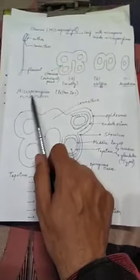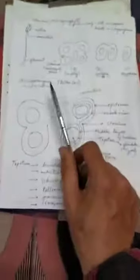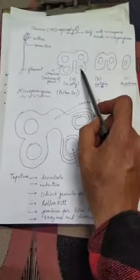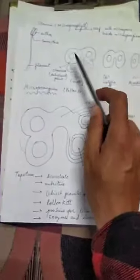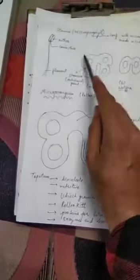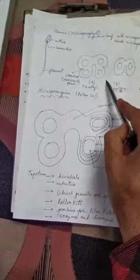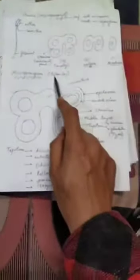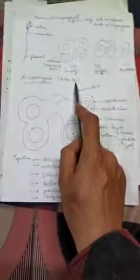Now the next topic is microsporangium. These thecas inside which the microspores or pollen grains develop are called as microsporangia. So a typical anther will carry four microsporangia. Microsporangium in common language is called as the pollen sac.